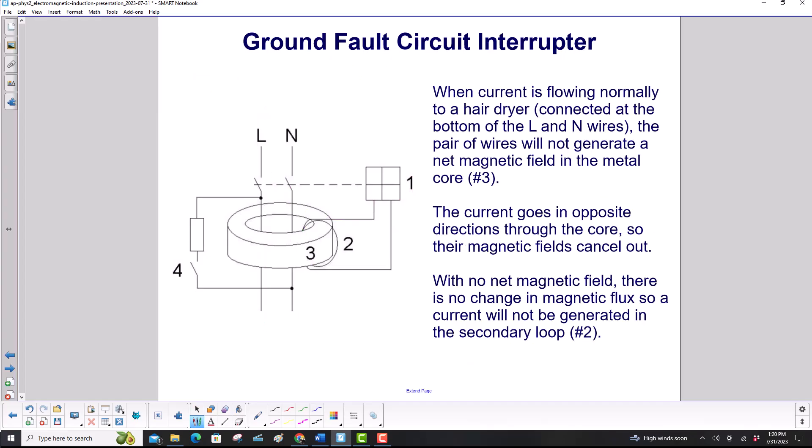When current is flowing normally to a hairdryer, we have the current coming down through there, comes into one plug on your hairdryer, and then leaves on the other. What do we have there? Both are generating magnetic field, but since they're in the opposite direction, the magnetic fields will be opposite. So they will cancel out.